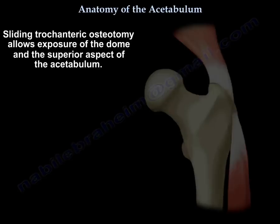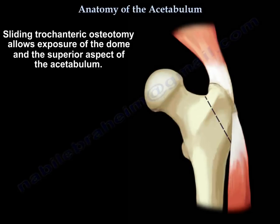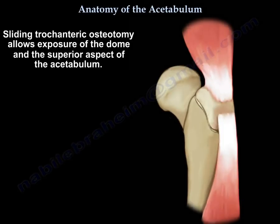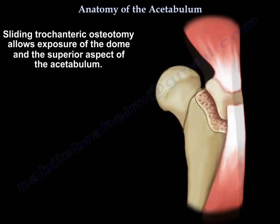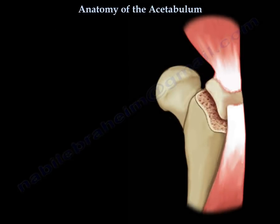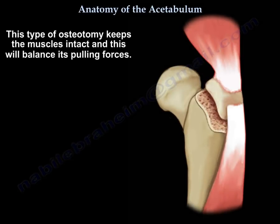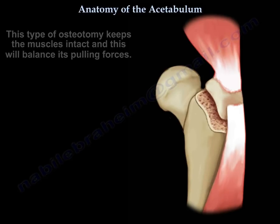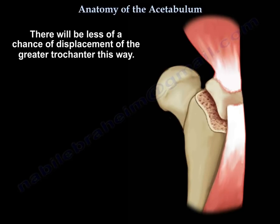The sliding trochanteric osteotomy allows exposure of the dome and the superior aspect of the acetabulum. This type of osteotomy keeps the muscles intact and balances their pulling forces, resulting in less chance of displacement of the greater trochanter.